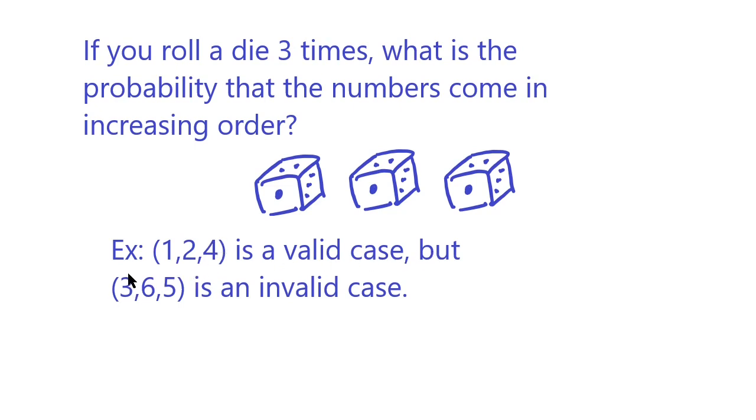roll three on the first time, then a six, then a five, that is not considered increasing order because going from six to five, the number decreases. So we're only going to consider strictly increasing cases. For example, if you roll three sixes, that's also invalid because going from six to six is not increasing.